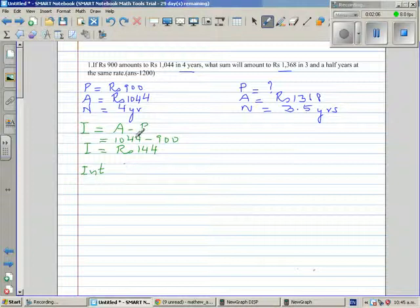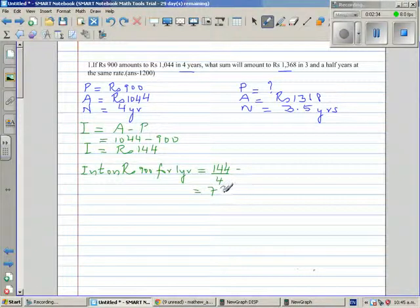Interest, I'll write in short. So 144 is the interest on 900 for 4 years. So interest on rupees 900 for 1 year would be 144 divided by 4. Let me halve this or let me write it down. So this is 72 divided by 2, that is 36 rupees. So interest on 900 for 1 year is 36.